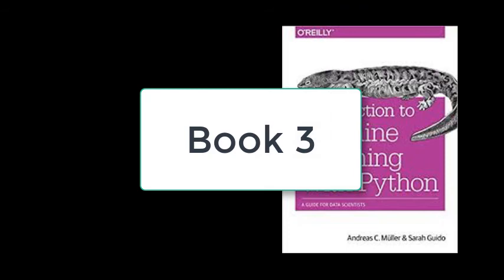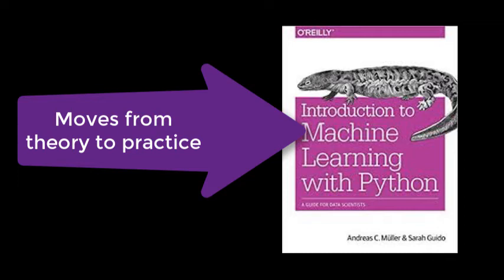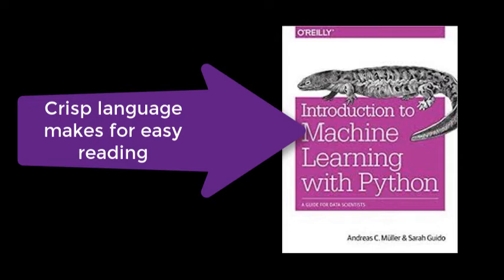Next on the list, number three, is Introduction to Machine Learning with Python. And this puts the programming knowledge we learned in Fluent Python together with the elements of statistical learning, really packages it together so you can see how Python and data science statistics work together to employ those models using the Python programming language. This book is just really solidly put together, easy to follow along with, kept up to date, well written, and with plenty of examples. I highly recommend it.